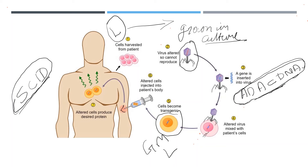However, this method is still not a permanent cure for SCID, because the genetically modified lymphocytes are not immortal. From time to time there is a requirement for re-infusion of genetically modified lymphocytes. A permanent cure is possible through replacement of the faulty gene, which we will see in the next slide.